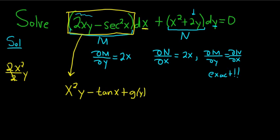When we integrate with respect to x, we add an unknown function of y. If we were to integrate with respect to y, we would add an unknown function of x. We integrated using the power rule, dividing by 2. The antiderivative of secant squared is tangent of x, and we integrated with respect to x, so we have our unknown function of y.